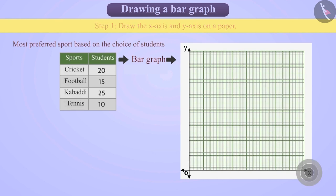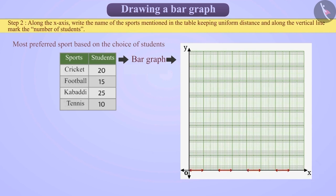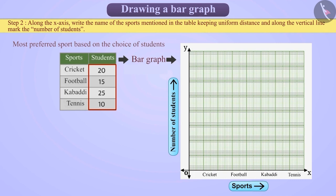Step 2: Along the horizontal line, we will write the names of the sports mentioned in the table, keeping uniform distance and write sports under it. In this way, we will show the sports on the horizontal line. Similarly, along the vertical line, we will mark the corresponding number of students.